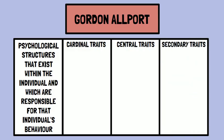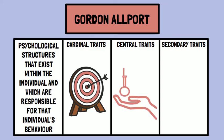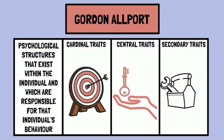Cardinal traits are the most dominant and represent the overarching personality of an individual. Central traits are those key traits that define a person's behavior in specific situations. Secondary traits, on the other hand, are less important and often only surface in certain circumstances.